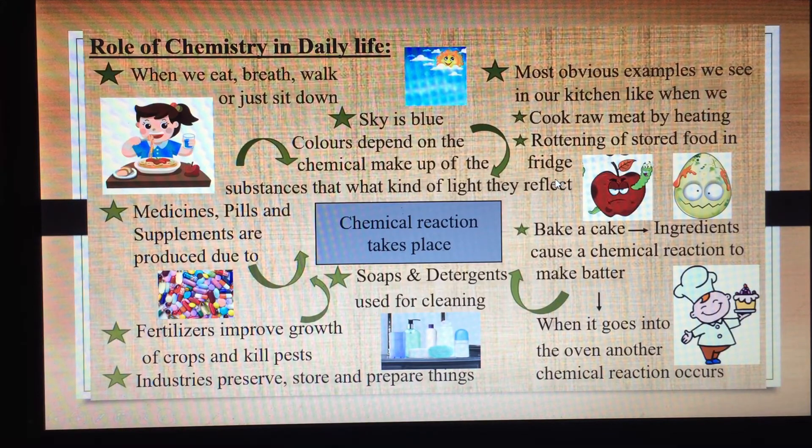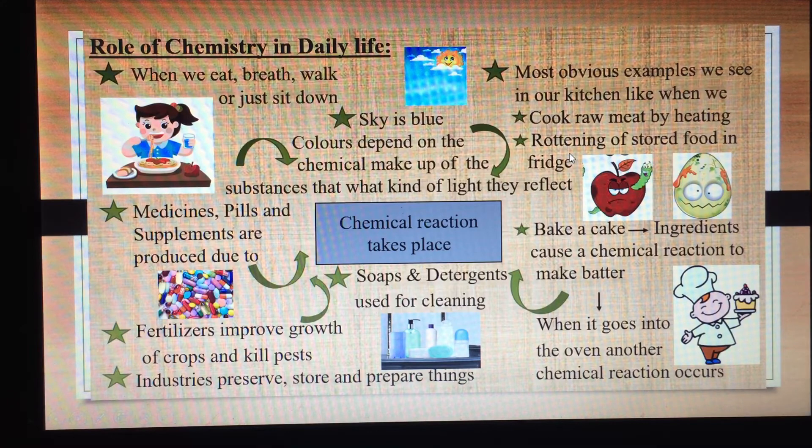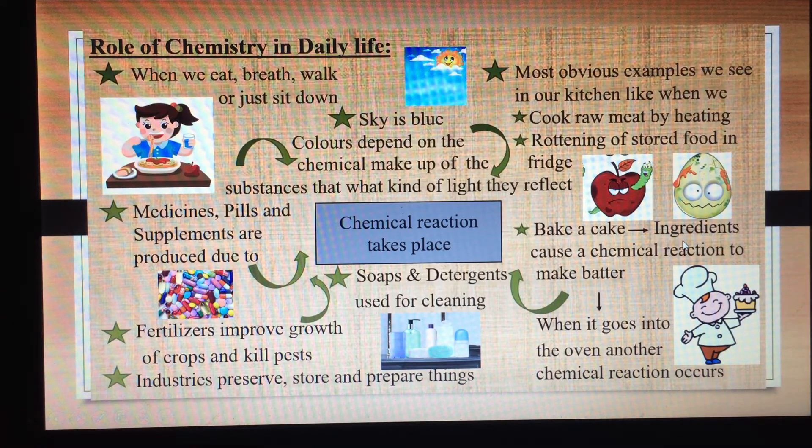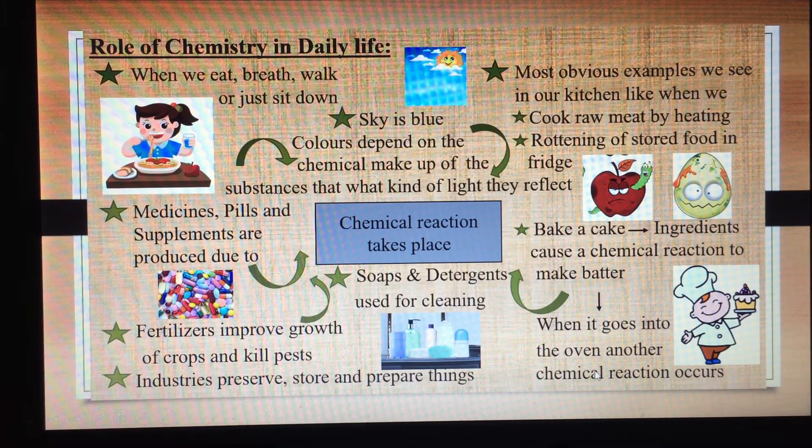If you store any food in the fridge, it is rotten. This is also a chemical reaction. If you bake a cake, you mix the ingredients to make batter. When you bake it in the oven, another chemical reaction occurs.